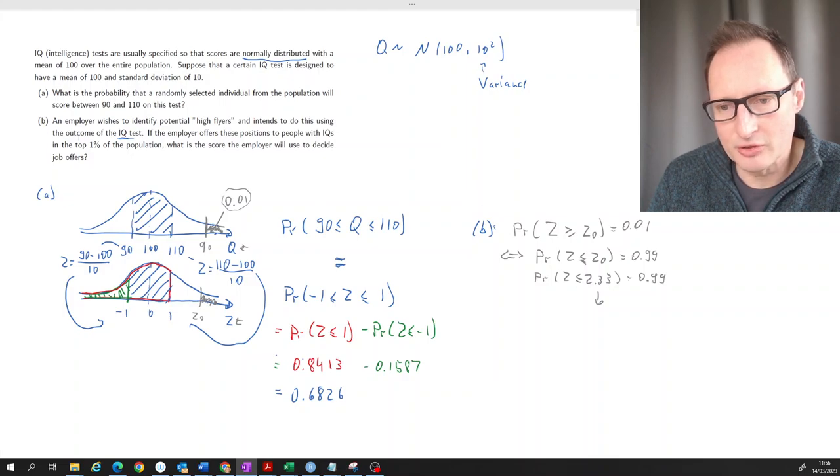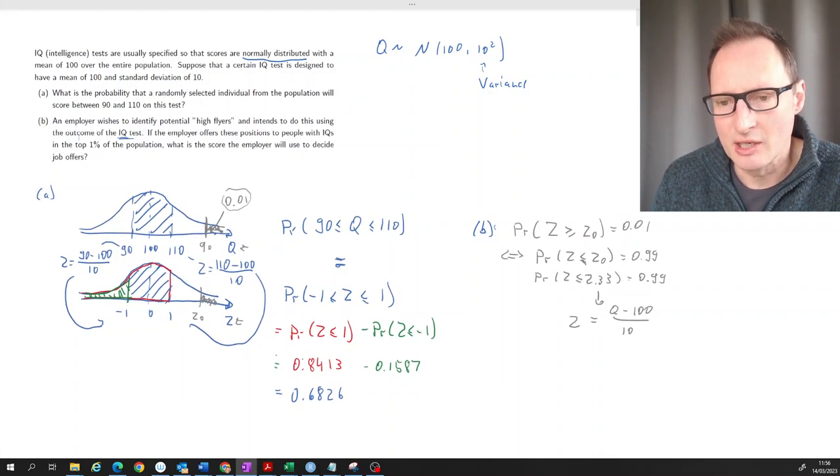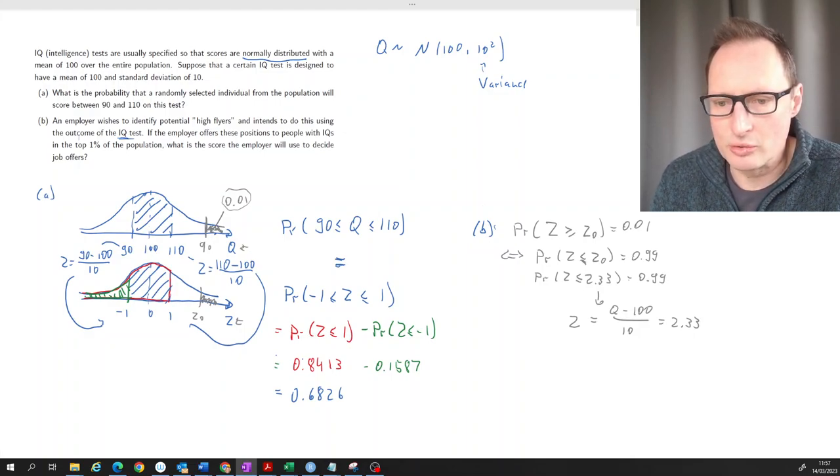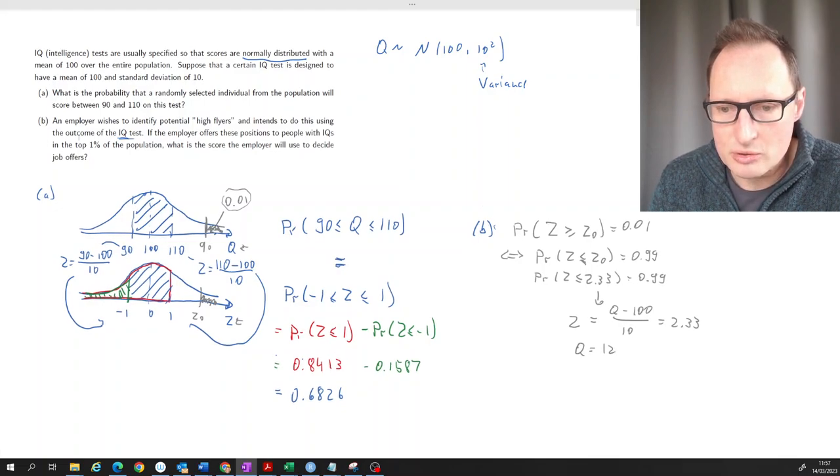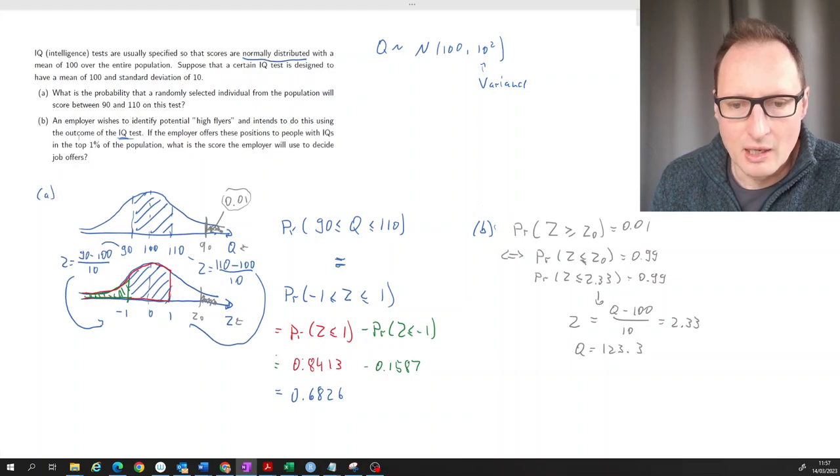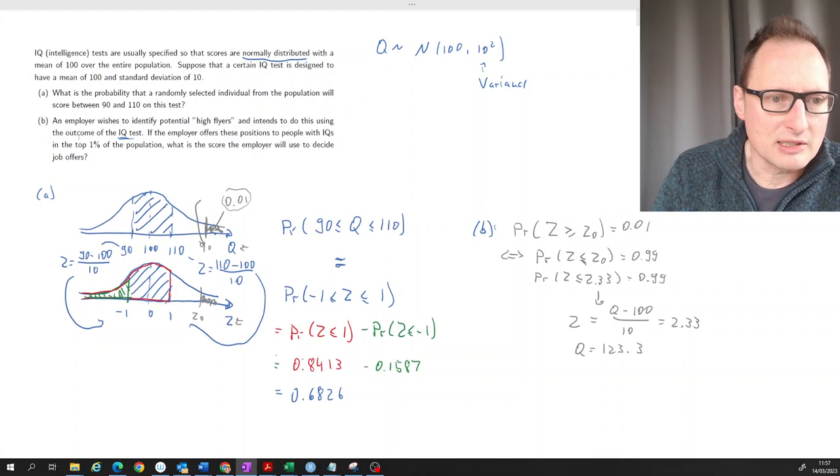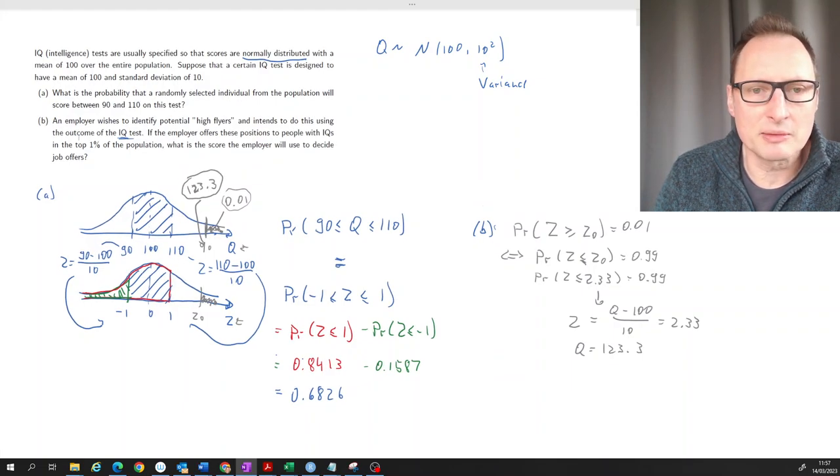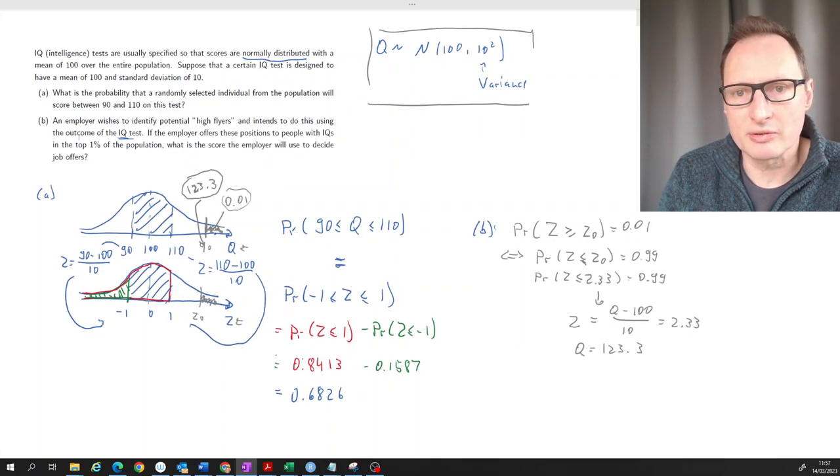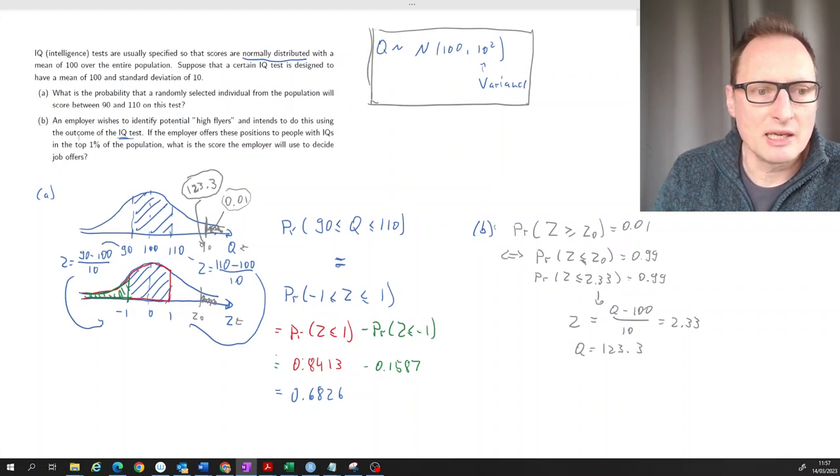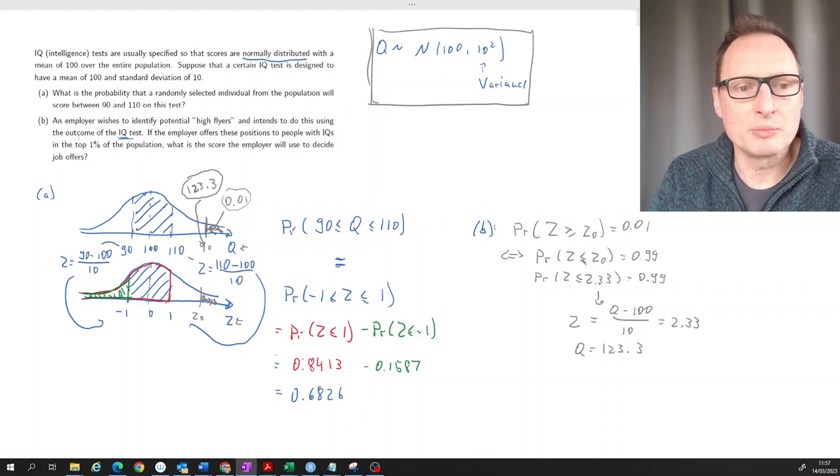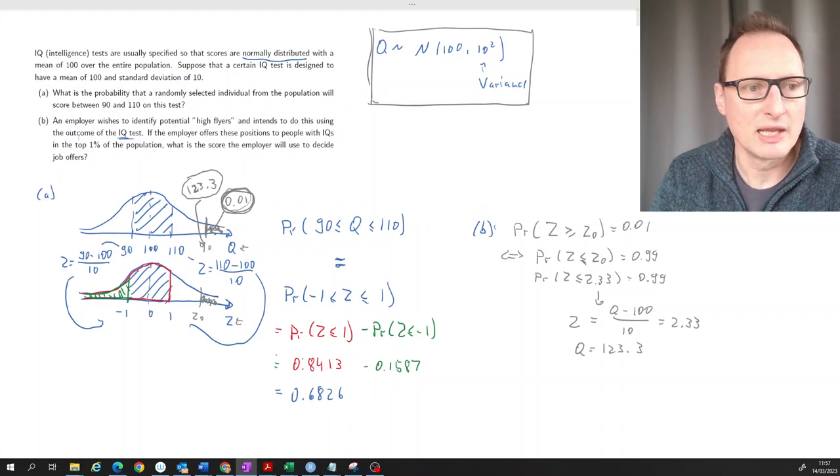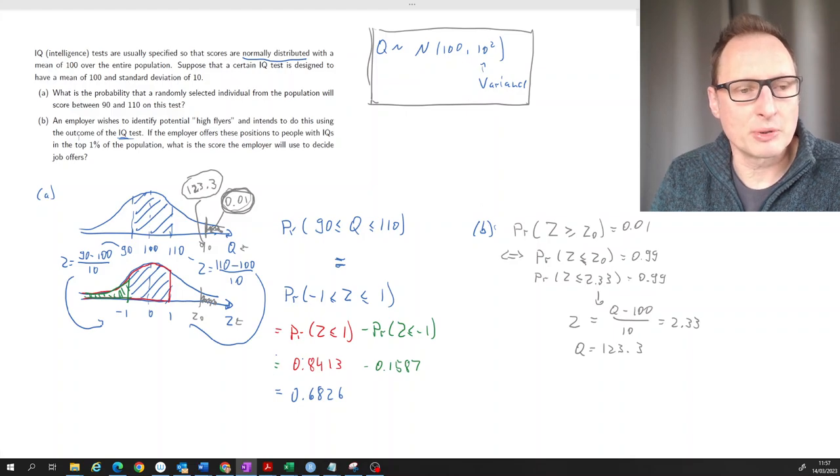Remember, our translation formula is Z equals Q minus the mean 100 divided by the standard deviation. So now we know that Z value, that is 2.33. And all we've got to do is we've got to find that Q value. And if you solve that for Q, what you get is 123.3. So that means that value Q here, that is 123.3. So people with IQs, if the IQ variable is normally distributed with that information, now we didn't question that here, that was just given. Then if you have an IQ of 123.3 or higher, you belong to the top 1% in terms of results on the IQ test. And then that would be the people this employer wishes to target.